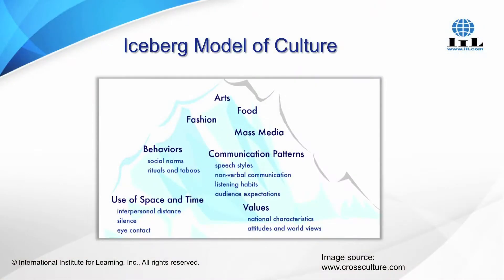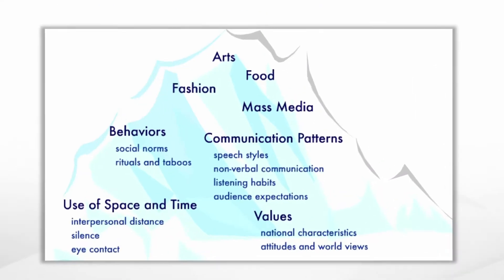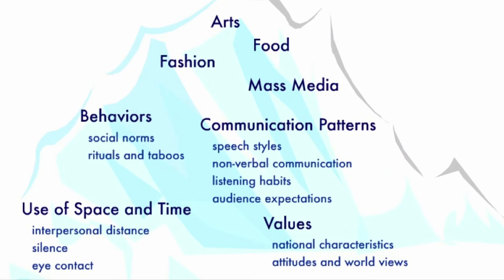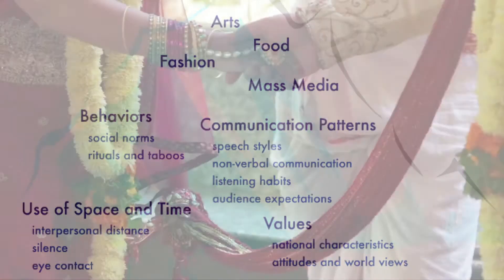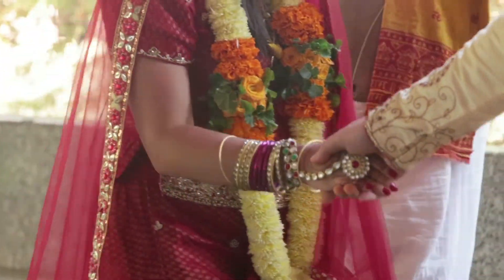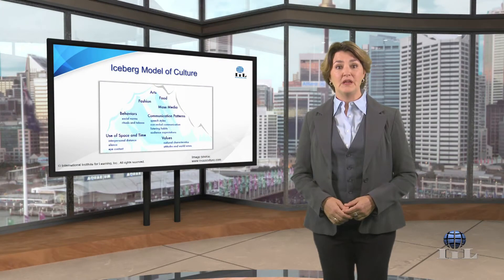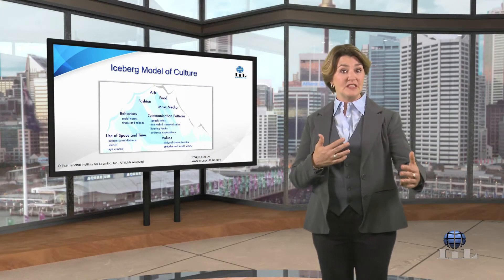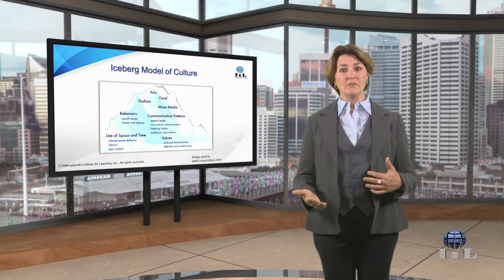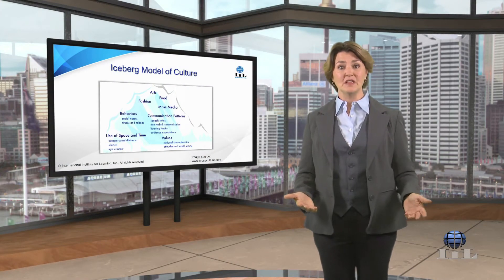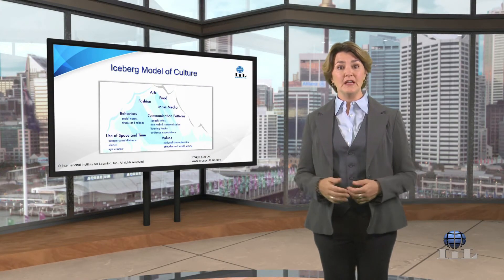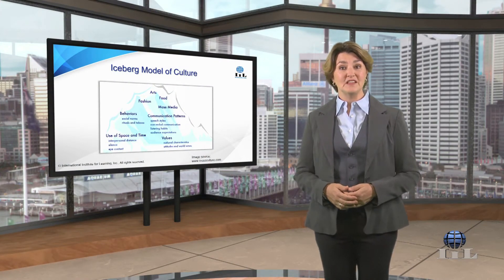Well, culture consists of the characteristics of a particular group of people. It includes how we dress, what we eat, how we see and depict beauty, how we give and receive information, make decisions, view authority, and use space and time.